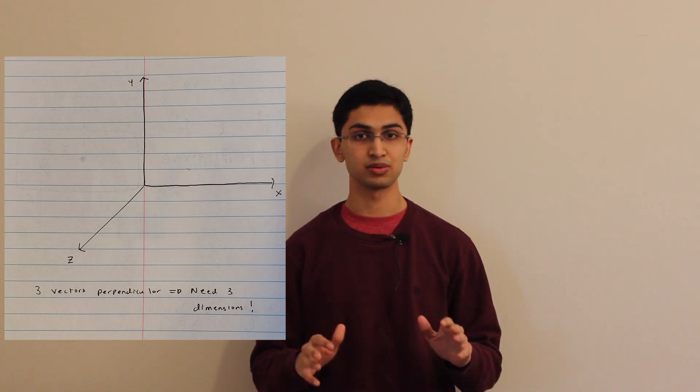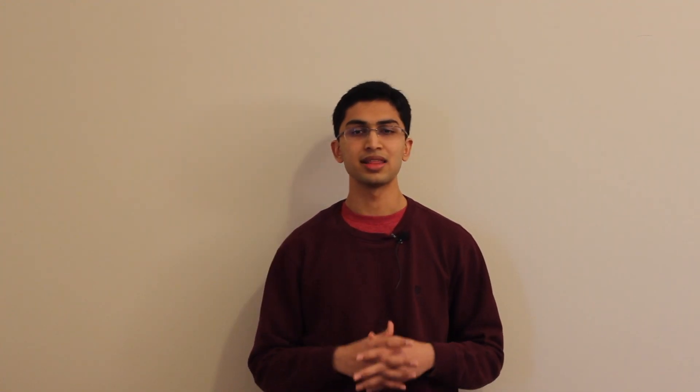Draw this one out — trust me, it will make it much, much simpler. And that's all that a cross product is. You're basically multiplying two vectors to get a third one that's perpendicular to the first two.